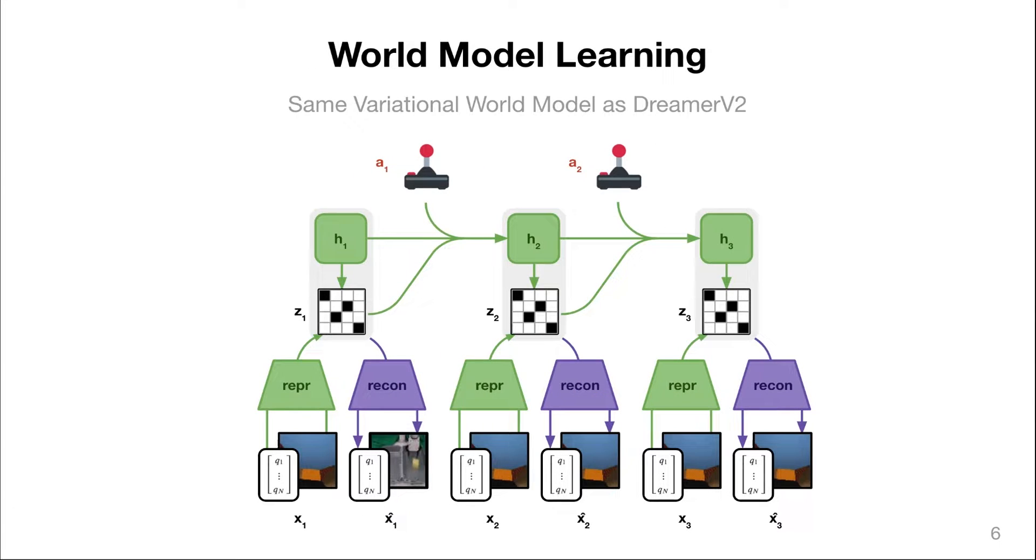To learn the world model, we use the algorithm of DREAMer v2 that learns a variational latent dynamics model. We first draw a sequence from the replay buffer that contains sensory inputs, actions, and rewards.